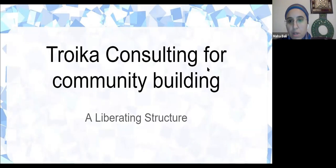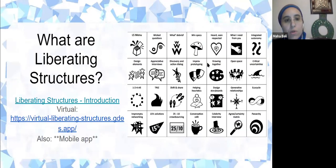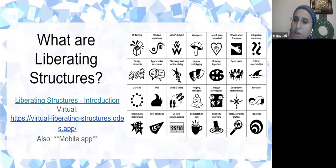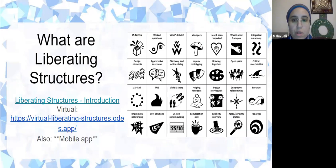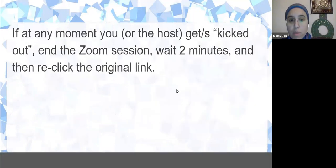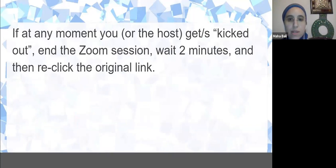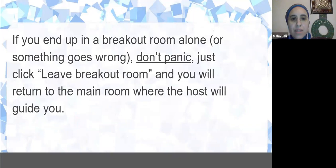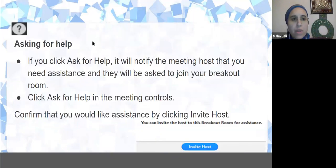Liberating structures are a large group of structures that help create equitable, engaging, energizing, and very quick conversations even with large groups, and they usually produce useful results. Troika consulting is one of them. Because we're using breakout rooms, let people know that if they find themselves alone in a breakout room not to worry, or if something goes wrong they can leave the breakout room and come back. There's also an ask-for-help button in Zoom.